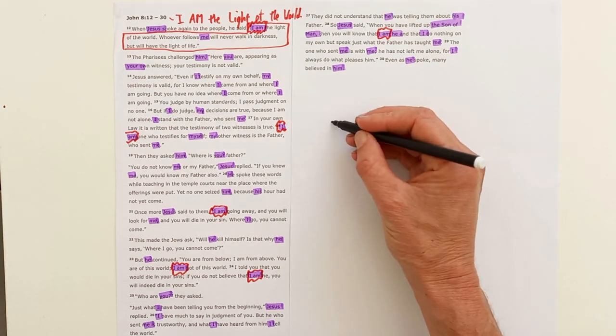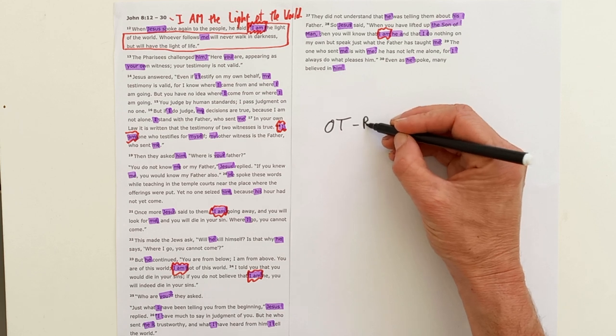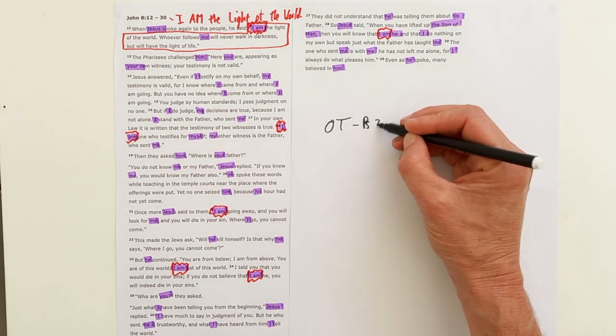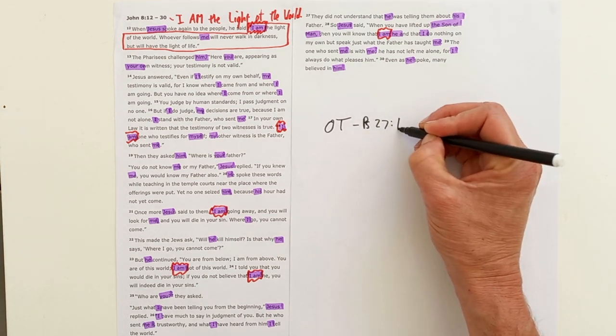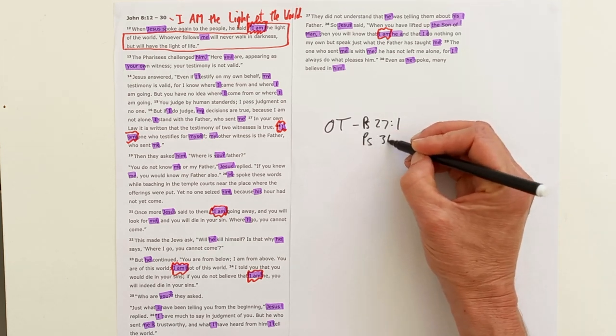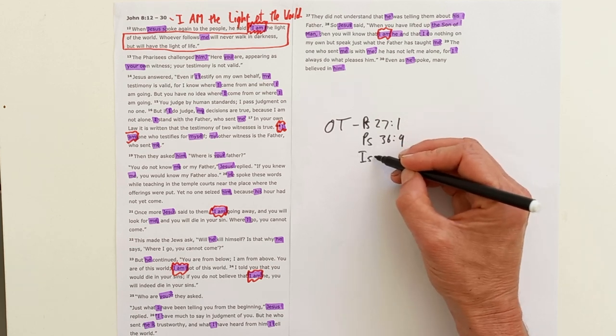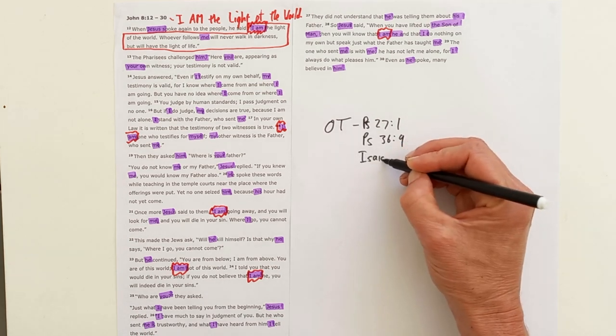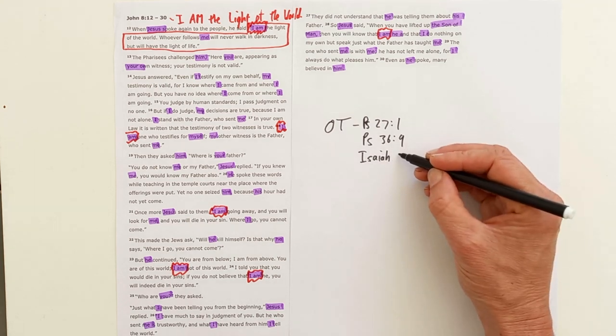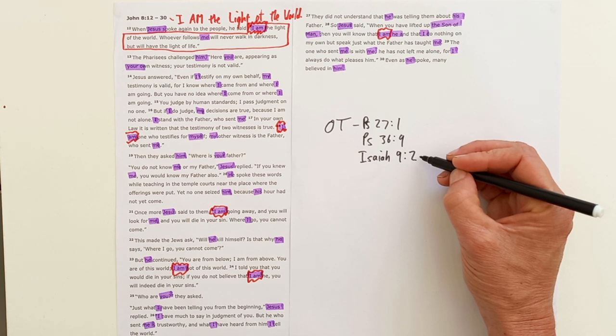Now the Old Testament context for God being the light of his people is vast. You can go and look at Psalm 27 verse 1 or Psalm 36 verse 9. Isaiah has a very rich picture of God being the light for his people. The people living in darkness have seen a great light.